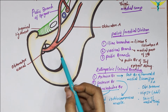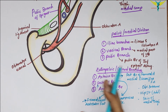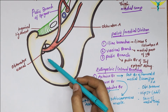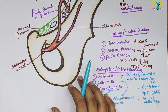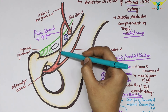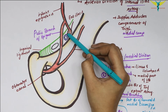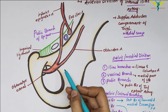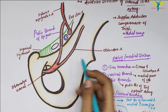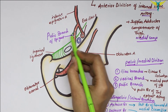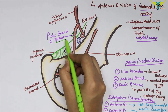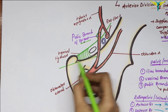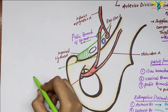The origin of the obturator artery may vary among individuals. In some cases, the obturator artery gives off an accessory obturator artery that forms an anastomosis with the external iliac artery. This artery is called the aberrant or abnormal obturator artery.